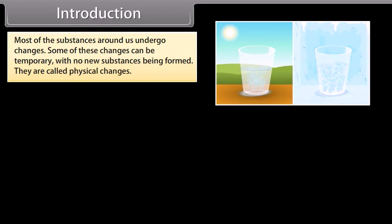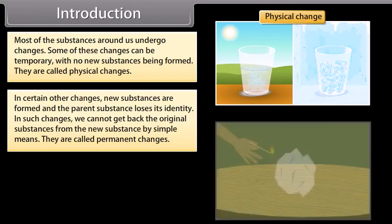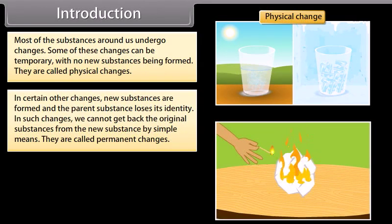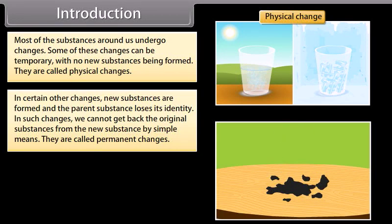In certain other changes, new substances are formed and the parent substance loses its identity. In such changes, we cannot get back the original substance from the new substance by simple means. They are called permanent changes.